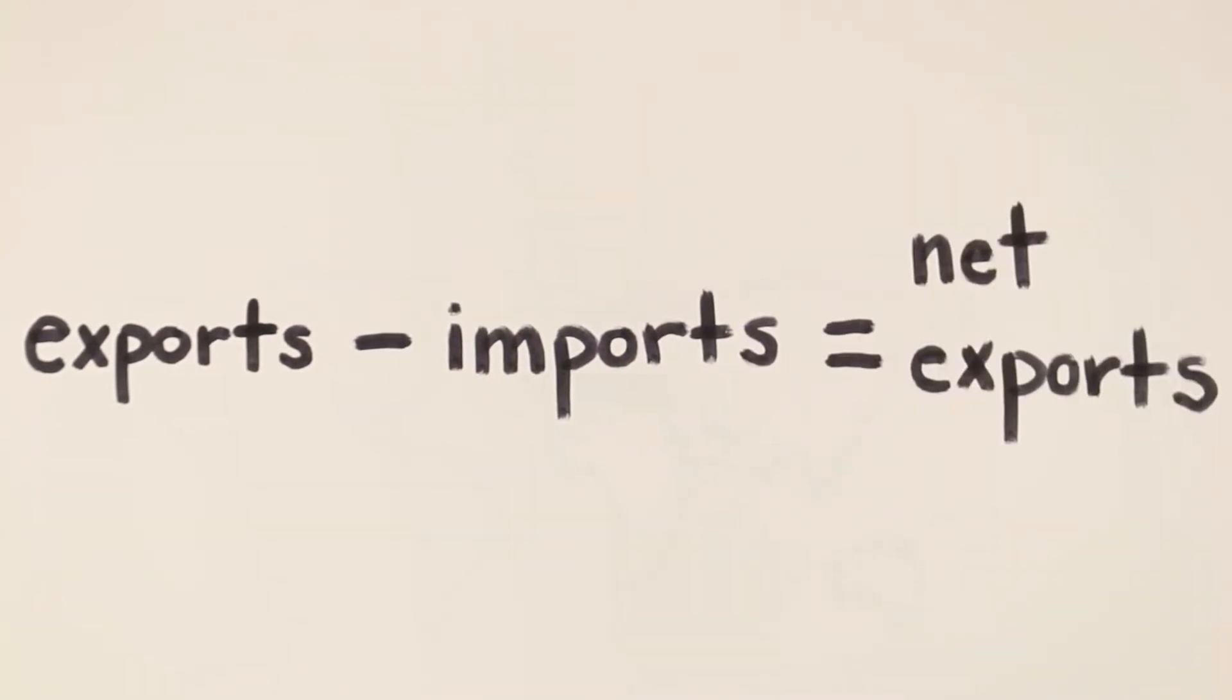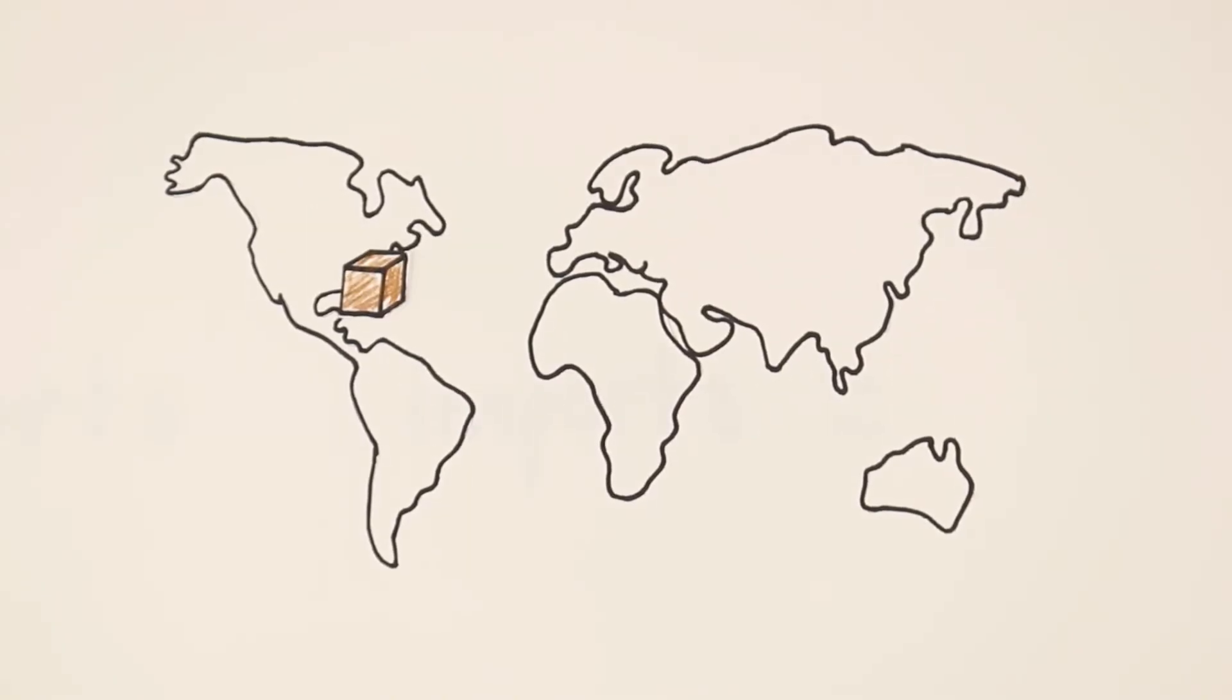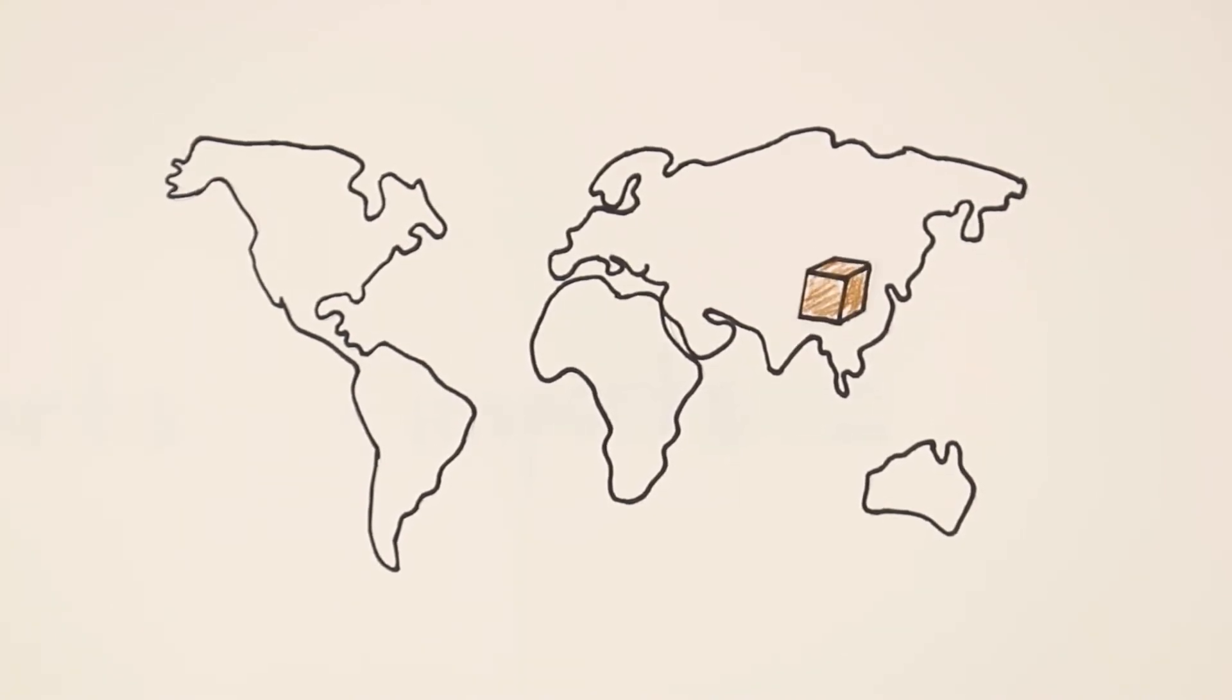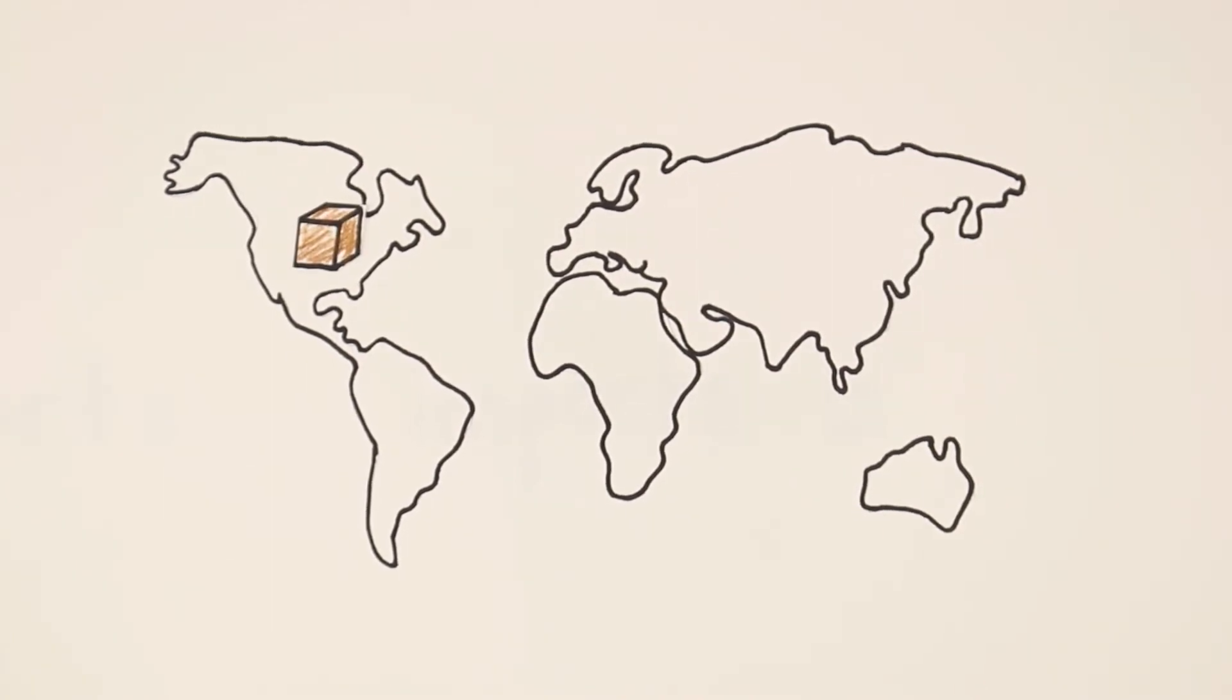If you take the value of your country's exports and subtract your imports, you get your net exports. Exports are products made by American companies but sold to people in other countries. Imports are the opposite. They are products produced in other countries but sold to the United States.